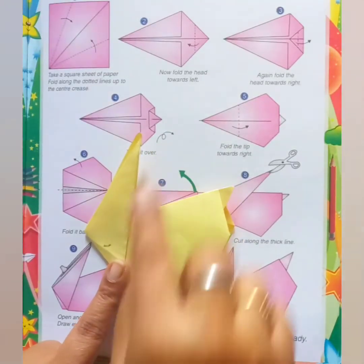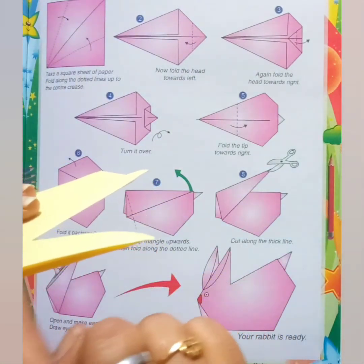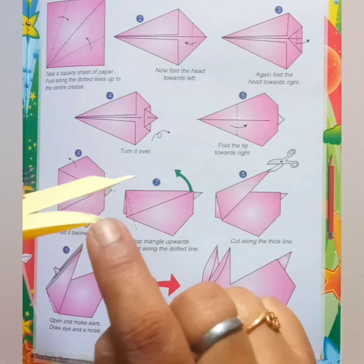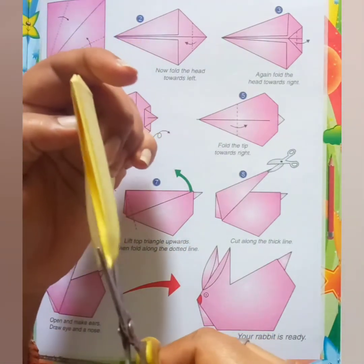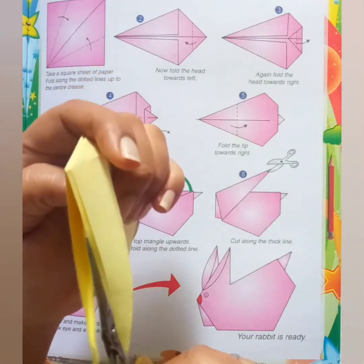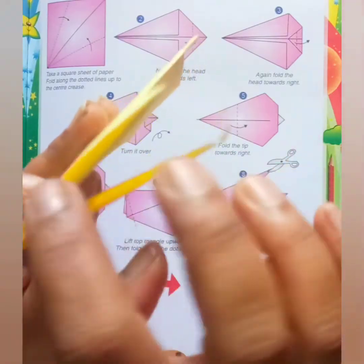Now you have to take the scissor and cut the ears from here. See like this, take the scissor and cut it from the center line like this.